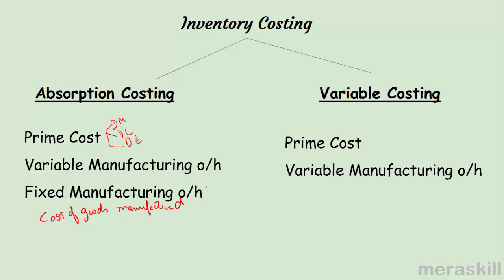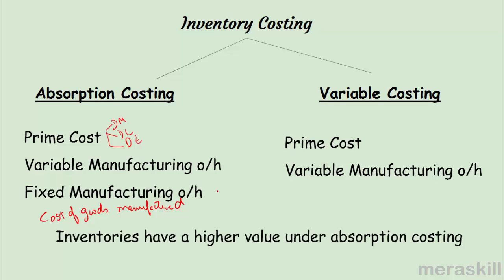Because absorption costing includes fixed manufacturing overhead in addition to prime cost and variable manufacturing overhead, inventories under absorption costing will be higher. There is more cost included — the fixed manufacturing overhead element makes inventory heavier. So inventories have a higher value under absorption costing because part of the fixed cost is included.